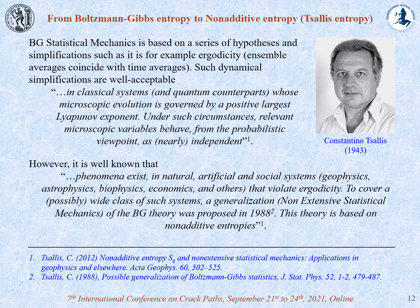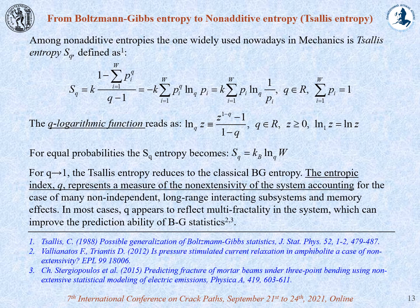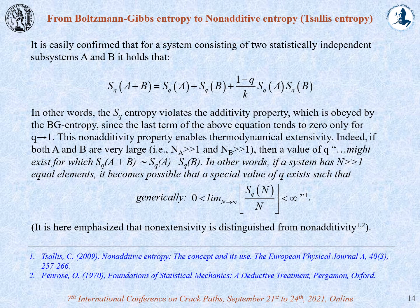However, phenomena exist that violate ergodicity. To study such phenomena, a generalization of Boltzmann-Gibbs theory was proposed by Tsallis, based on non-additive entropies. Among them, Tsallis entropy is widely used in mechanics. It is defined in terms of the Q-logarithmic function. The entropic index Q represents a measure of the non-extensivity of the system, and it accounts for the case of many non-independent long-range interacting subsystems and memory effects. In most cases, Q reflects multifractality. The violation of the additivity property is obvious. The last term of the equation tends to zero only for Q approaching one. This non-additivity property enables thermodynamical extensivity at least if both subsystems are very large.